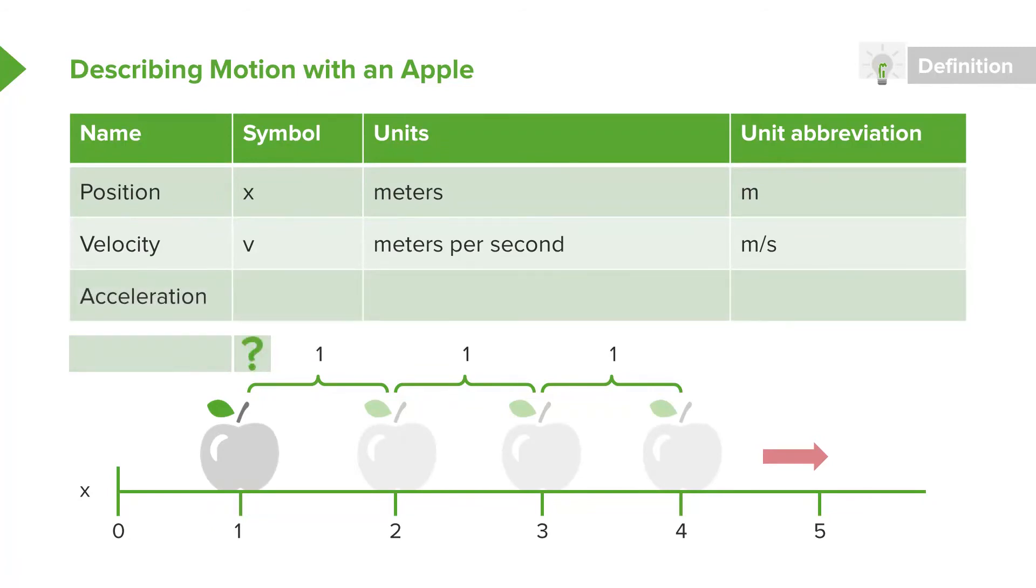But then, not only can the position be changing, and we give that a name, velocity, but the velocity itself can also be changing. And so we call this change the acceleration. Is this apple accelerating? If it were, it would look something more like this, where the apple is actually moving, but it's not moving the same amount of distance in every second. So maybe in the first second it only goes 0.5 meters, but then in the next second it goes a full meter. And then in the next second after that it goes up full 1.5 meters. So you can see it's doing what we call speeding up. It's gaining speed. We measure this using acceleration.